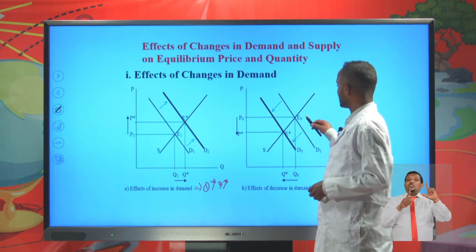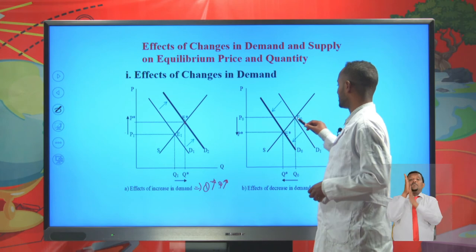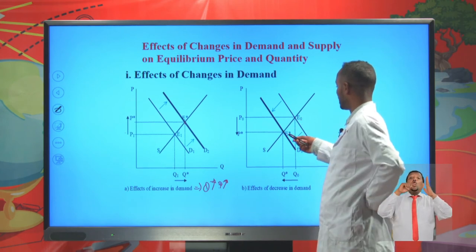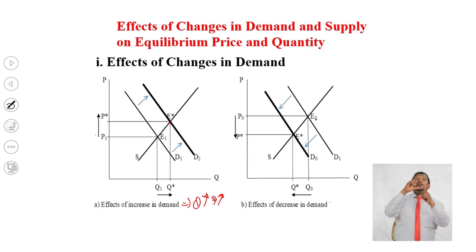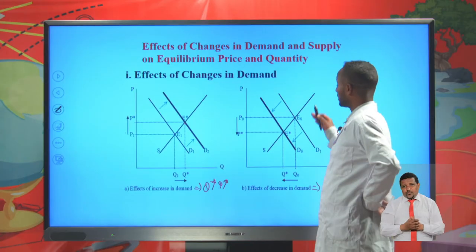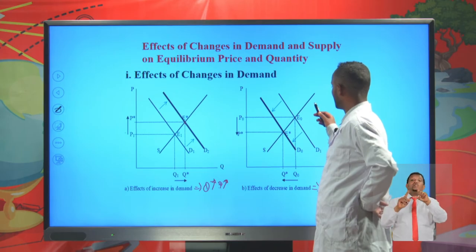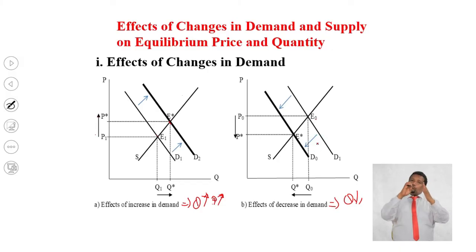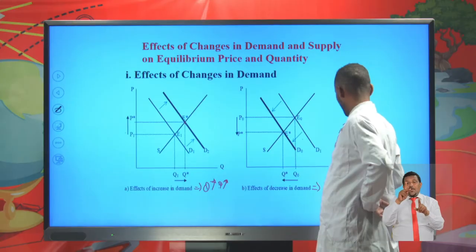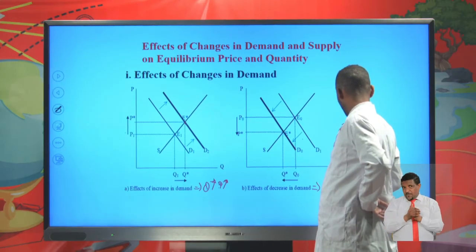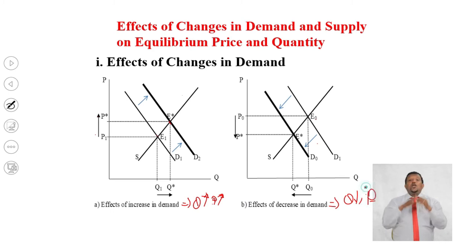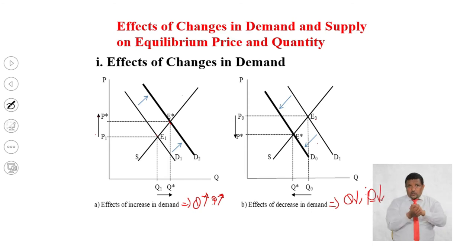As a result of a decline in demand, we shift the demand curve to the left. The equilibrium point shifts from E₀ to E*, and the equilibrium quantity will also decline. The equilibrium price also shifts from P₀ to P* and will decline as well. So there is a direct relationship between the changes in the direction of price and quantity demand.